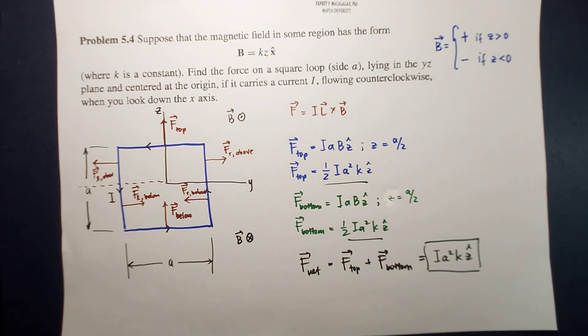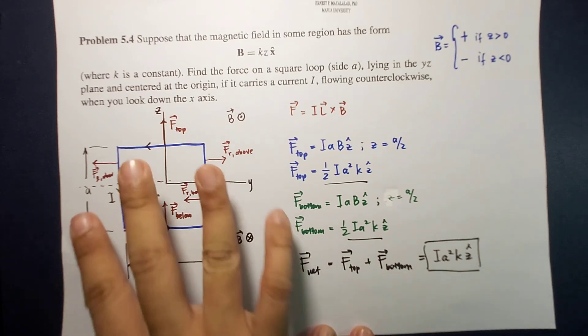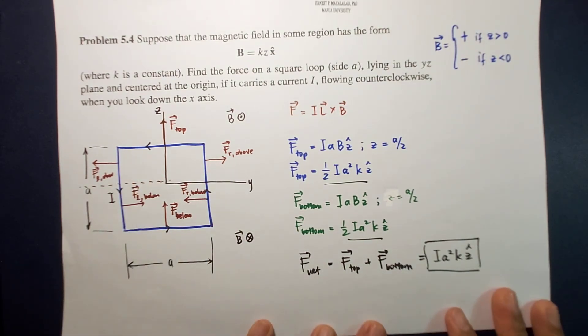Okay, so that's it. This is the force on the square loop given this configuration. Easy right? So I hope you learned something today, and I'll see you guys in the next video. Bye.